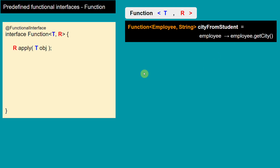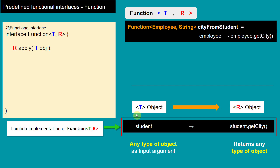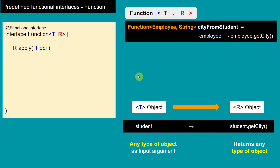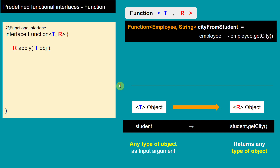The important thing to note in the Function functional interface is that the lambda implementation takes any type of object as an input argument and can return any type of object. If you remember, Supplier could only return any type of object and Consumer could only consume any type of object. If we combine both, we get Function, which can take any type of object and return any other type of object.